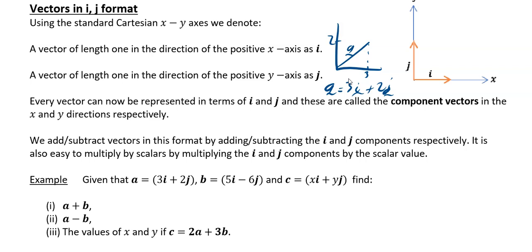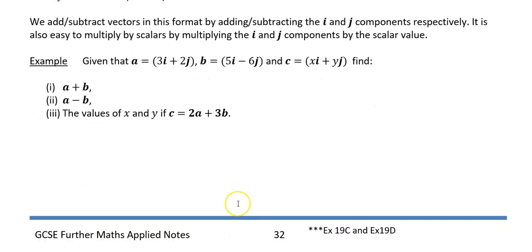i and j are called base vectors. With i and j you can make up any vector at all, absolutely anything. They're very easy to work with as we're about to see in this example.